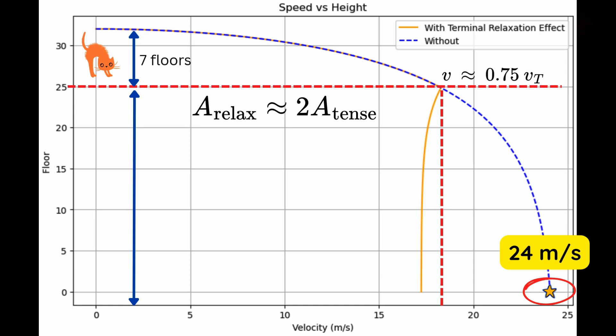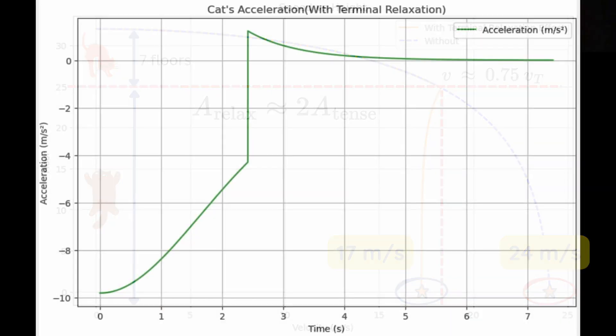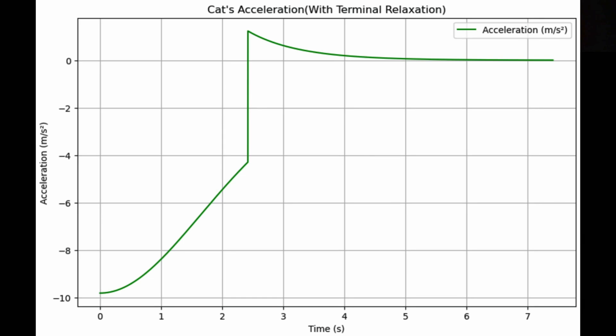In contrast, the relaxed cat, benefiting from the terminal velocity reduction, slows down to about 17 meters per second, or about 60 kilometers per hour—similar to cruising through city streets. It might not sound like much, but that difference could be the line between severe injury and survival.